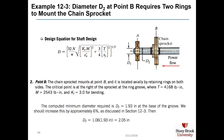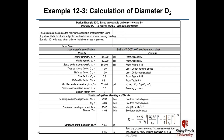Diameter D2 at point B requires two rings to mount the chain sprocket and keep it from moving left and right. We have a torque of 4168 pound-inches and a moment of 2543 pound-inches at this location. KT equals 3.0 for bending due to the ring grooves. We calculate D2 at the base of the groove as 1.93 inches, and adding the 6% factor gives D2 equal to 2.05 inches.